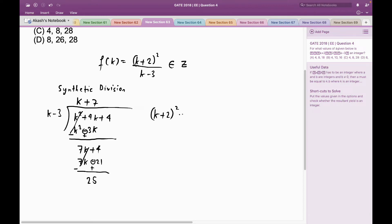This equals (k-3) times (k+7) plus 25, which is nothing but divisor times quotient plus remainder. Now if I divide this entire thing by k-3, then I would have on the left-hand side f(k).